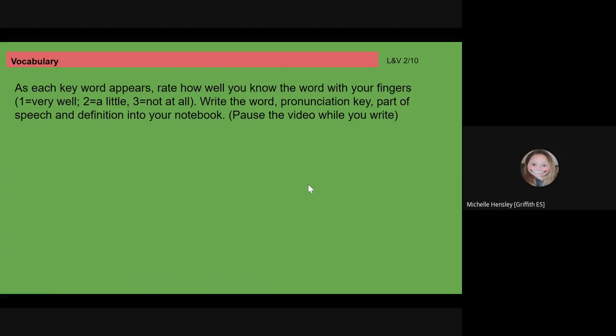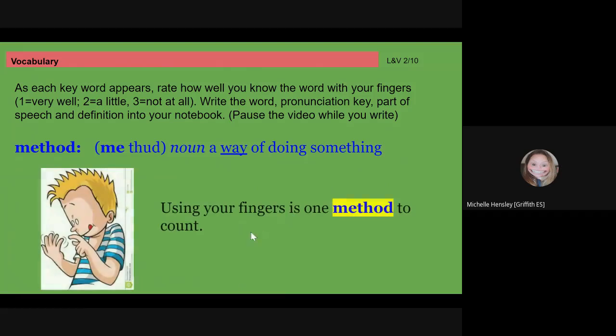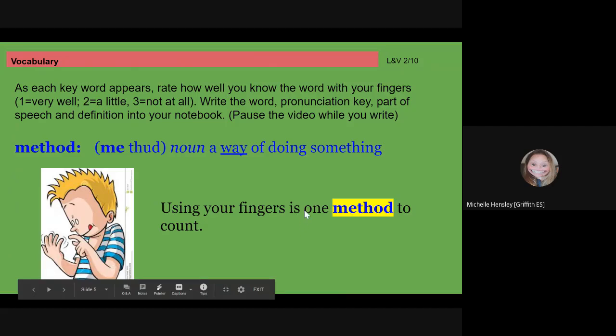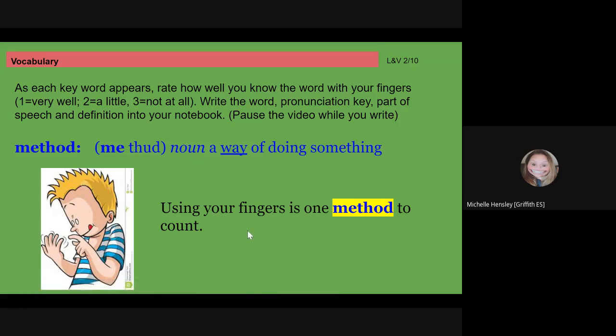Next word: method. How well do you know method? Method, noun. It's a way of doing something. Method. Using your fingers is one method to count. If you're in my class, you know that I say I use my fingers all the time, still, even as a grown-up. It is a method. It's a way to count. Method, a way of doing something. Following the recipe is one method for baking a cake.